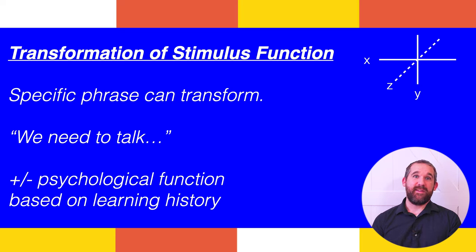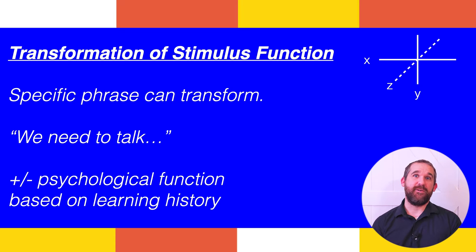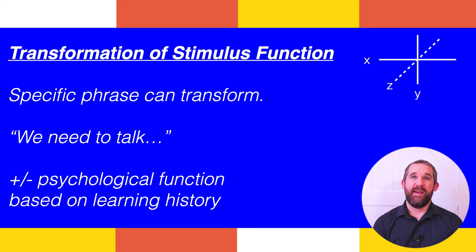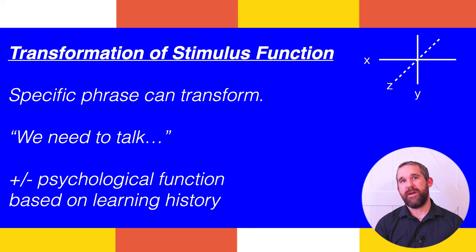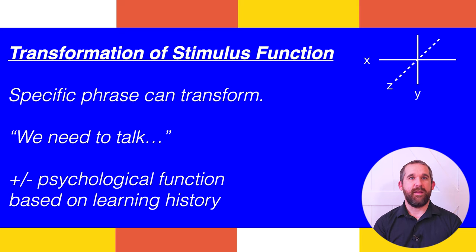There are many examples in everyday life when stimuli such as a specific phrase or word acquire psychological function. Although these stimuli may begin as relatively neutral, due to a learning history they change when certain phrases are used. For example, the phrase 'we need to talk' seems fairly innocent, but for a lot of people it stirs up feelings of dread and possible anxiety. If said by a boss or a partner, it can result in plummeting feelings in the stomach, a sense of dread, and an intense desire to escape. But if said to a small child without much of a learning history, this phrase would not produce those feelings of dread.